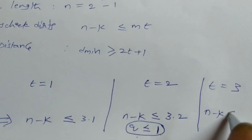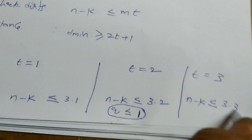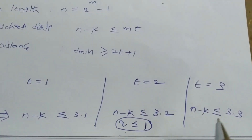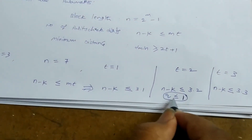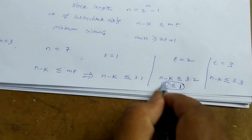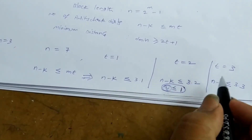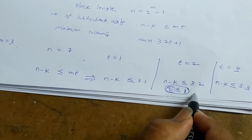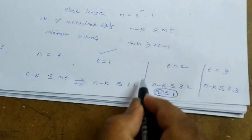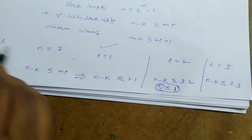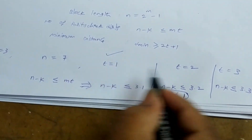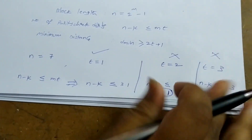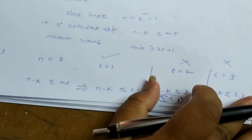For t equal to 3, n minus k must be less than or equal to 3 into 3, which is 9. It is quite difficult to satisfy all these parameters for t equal to 3, so mostly we prefer t equal to 1. This means that for m equal to 3, BCH codes can support only single error correction.